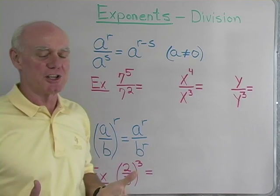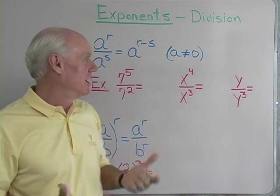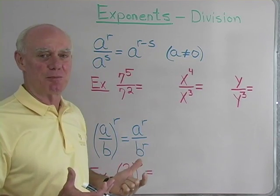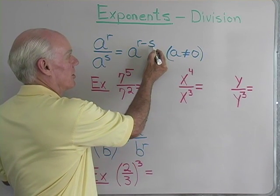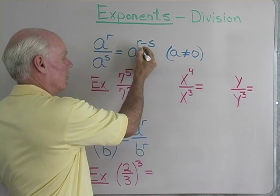So when I multiplied with the same base, I added exponents. In this case, when I do division with the same base, I'm going to subtract exponents. And you always subtract the exponent in the denominator from the exponent in the numerator.